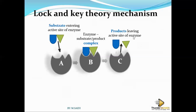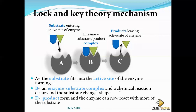The substrate fits into the active site, forming an enzyme-substrate complex. A chemical reaction occurs, the substrate changes shape, and the product forms. The enzyme can now react with more of the substrate — it goes back and reacts again over and over. That's how this mechanism works.